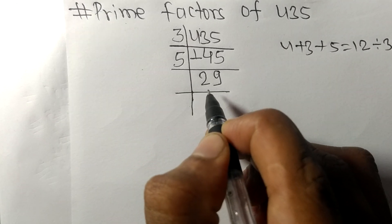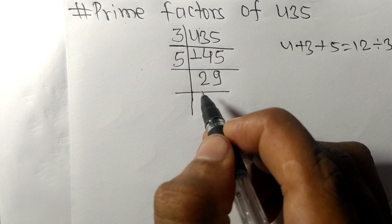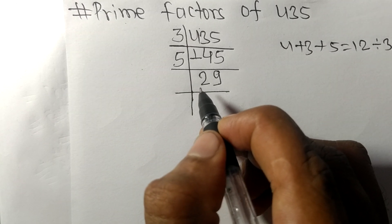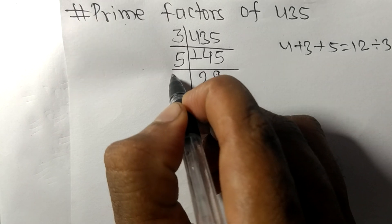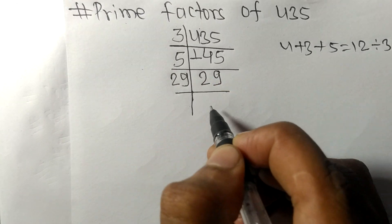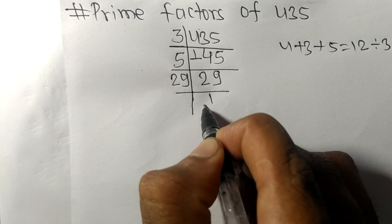Now we got here 29, which is a prime number. So it is divisible by 29 itself and we get here 1.